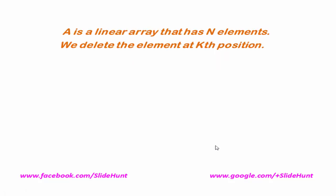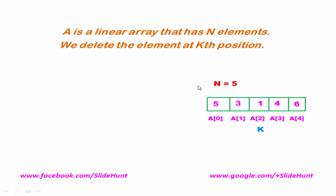Next we see the algorithm. Suppose A is a linear array that has n elements, and we want to delete at the kth position. Here n equals 5 and k equals 2. Our first task is to store the deleted element in a variable, so in step 1 we write: x = A[k]. This step is optional — if you want to use the deleted element further in your program you can use it, otherwise you can skip this step.